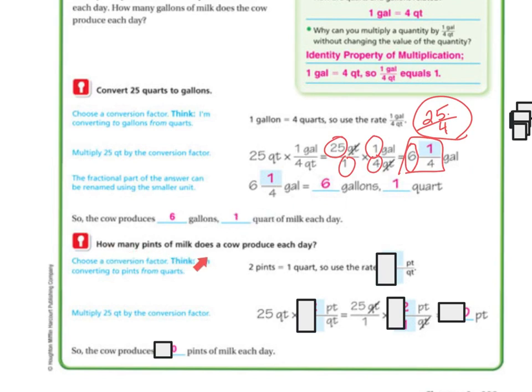Now, how many pints of milk does a cow produce each day? So choose a conversion factor. I'm converting pints from quarts. I know that 2 pints equals 1 quart. So I'm going to use the conversion rate 2 over 1. Then I'm going to multiply 25 by that conversion rate.